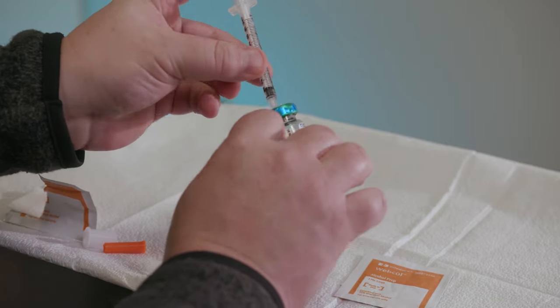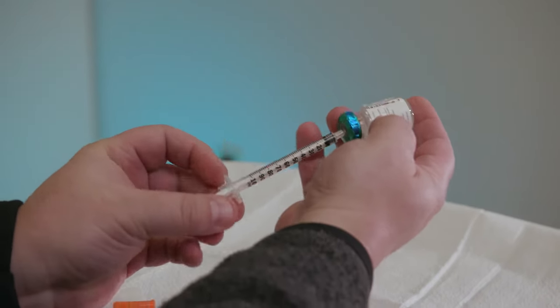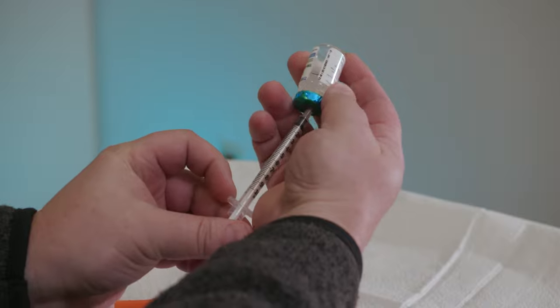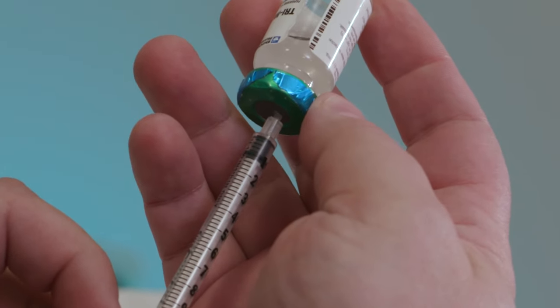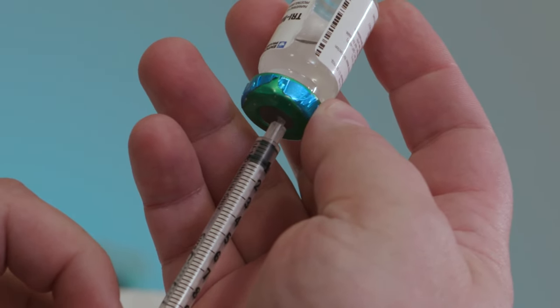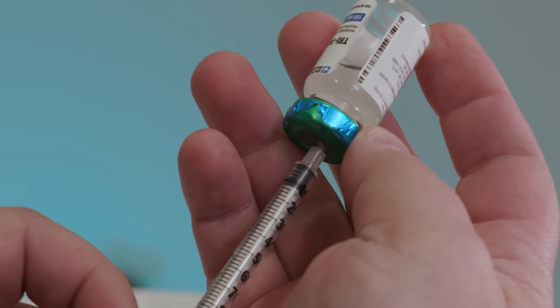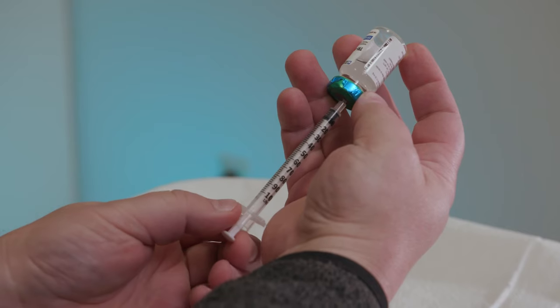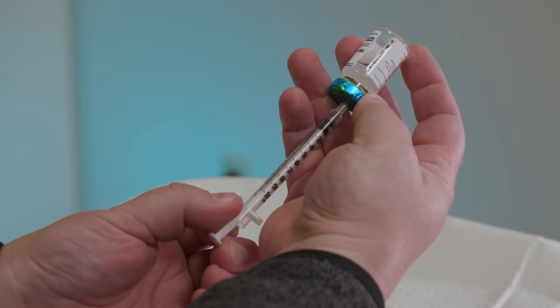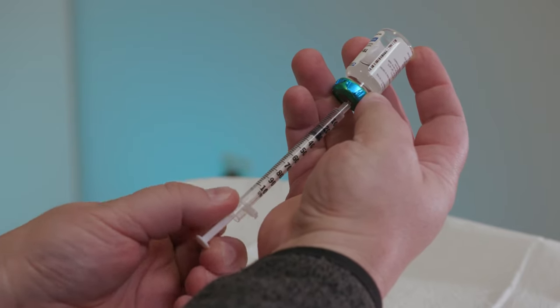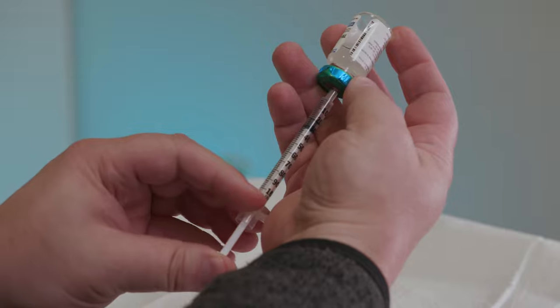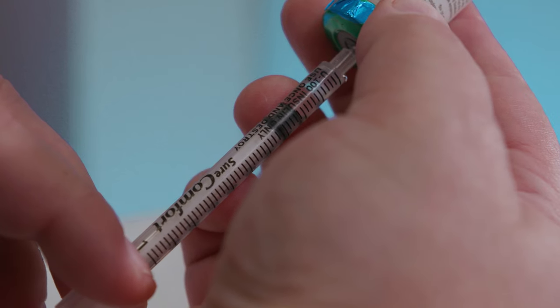Next, turn the vial and syringe upside down. Don't let go of the vial, or the needle will bend. Make sure the tip of the needle is in the medication. Turn the syringe so you're looking at the numbers and lines. Pull the plunger down past your prescribed dose. Then, slowly push it back up to your dose. This helps remove any air bubbles.